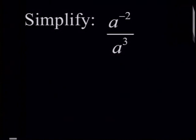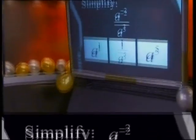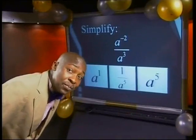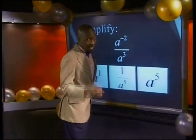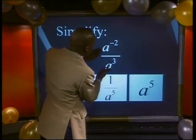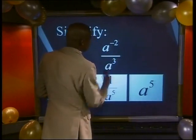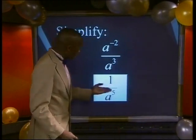a to the power of negative 2 divided by a to the power of 3 — think carefully. How did it go this time? Did you get a to the power of 5 as your answer? No, no, no! When you divide powers of the same base you subtract the exponents, so the correct answer is 1 divided by a to the power of 5.